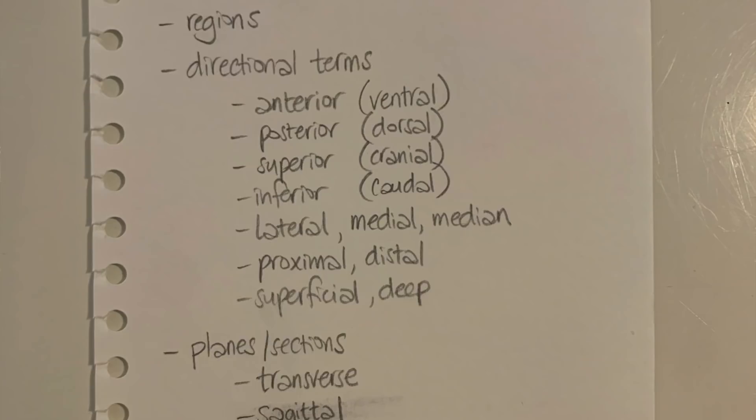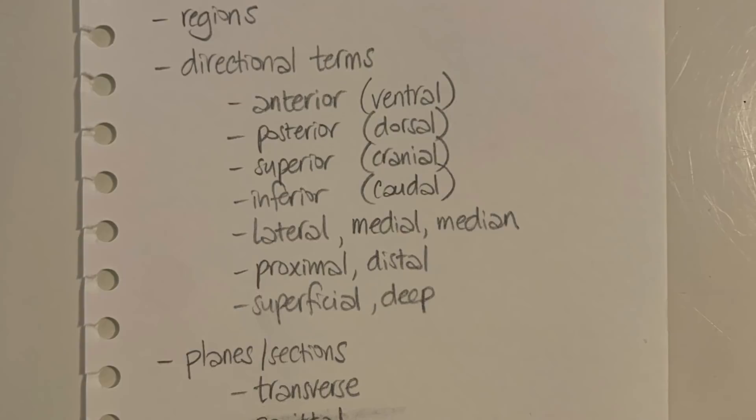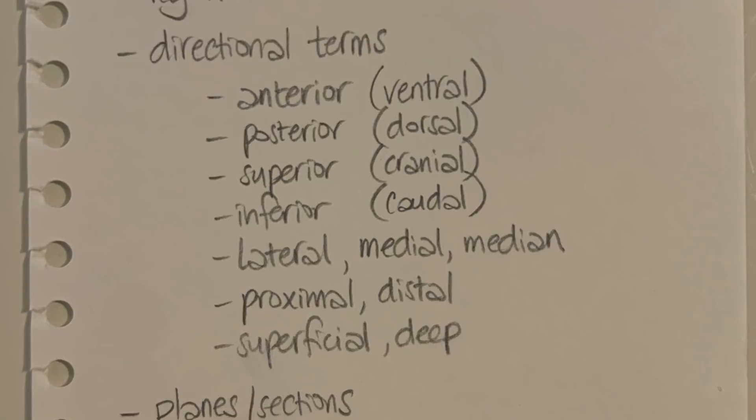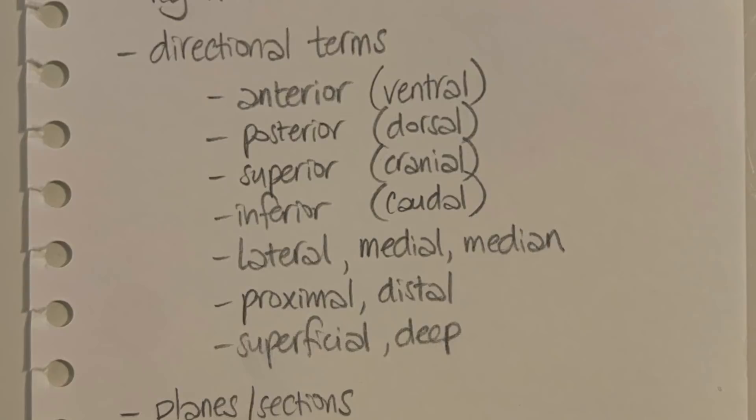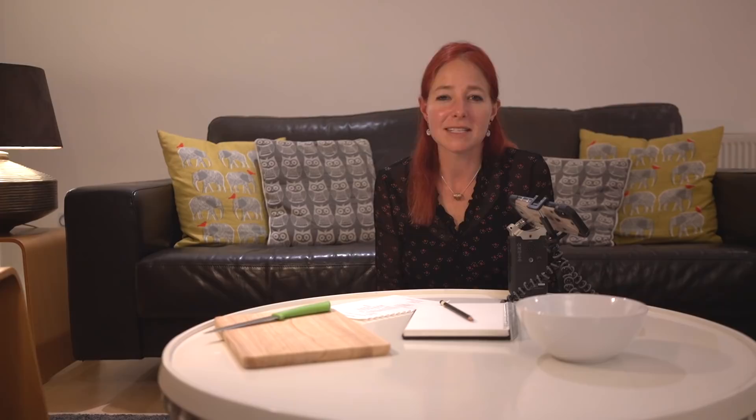Now I'll talk about some directional terms, which are really useful for describing different structures in the body relative to each other. They're useful in anatomy, when examining a patient, and in surgery — they help describe the landscape of the body. Some I've already mentioned: anterior refers to the front of the body, and posterior refers to the back of the body.